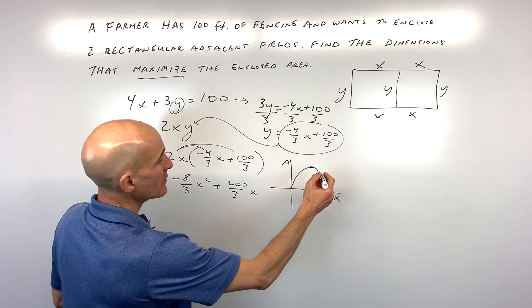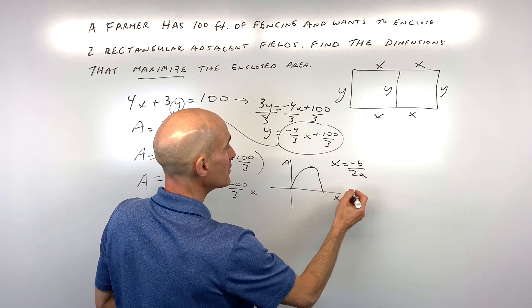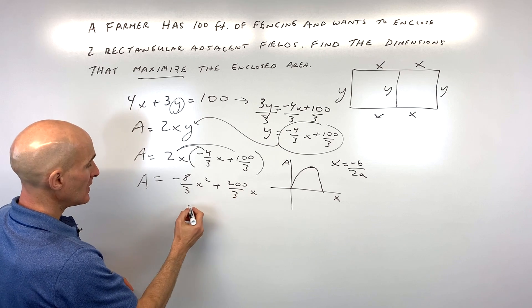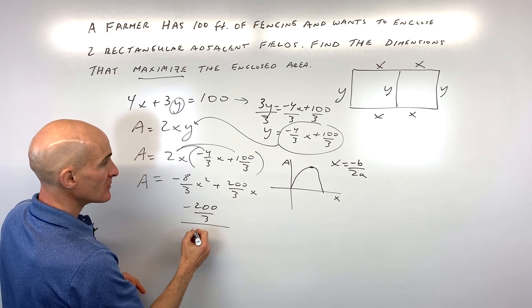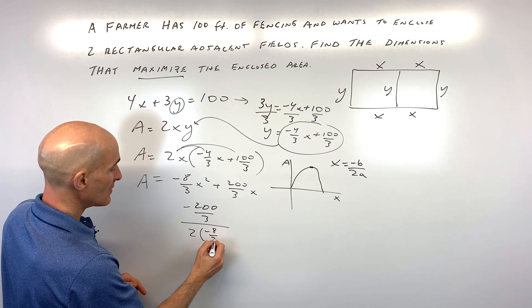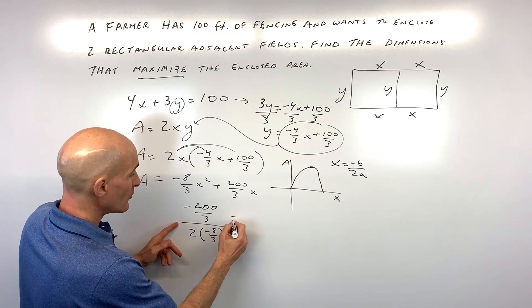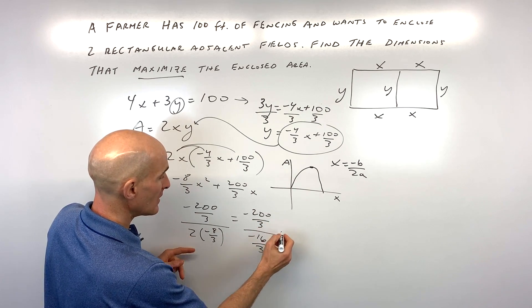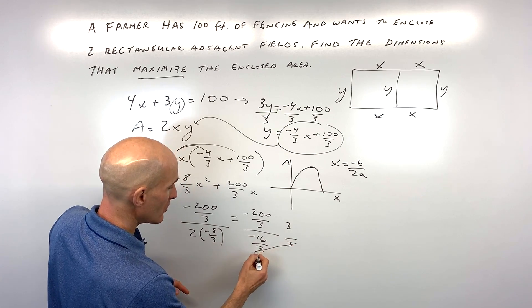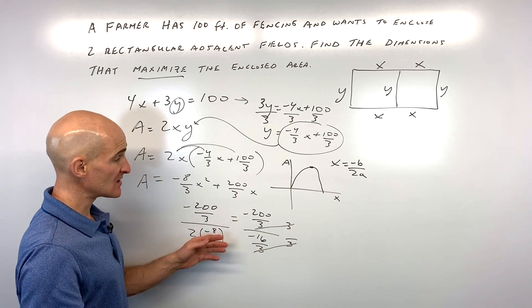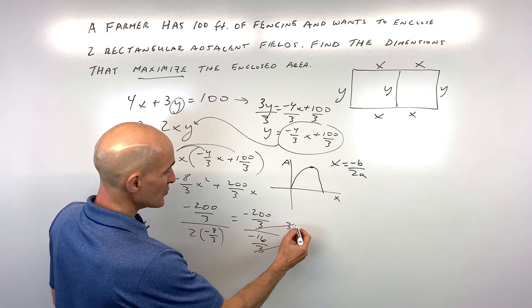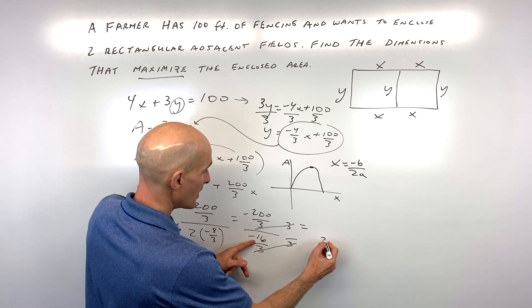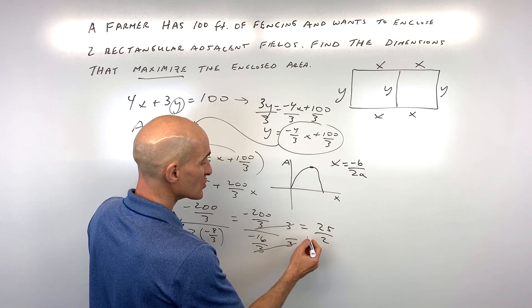And remember, to find the vertex, we use this formula negative B over 2A. So we've got A, B, C is 0. So the opposite of B would be negative 200 over 3 divided by 2 times A. So 2 times negative 8 thirds. Now simplify a little bit further. So this is negative 200 over 3. This is negative 16 over 3. If I multiply the numerator and the denominator by 3, that gives us negative 200 over negative 16. The two negatives cancel. And if we reduce that down, that comes out to, let's see, 8 goes in here twice, and 8 goes in here 25 times. So it's 25 over 2.